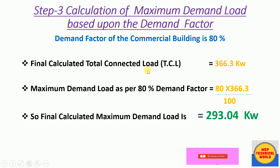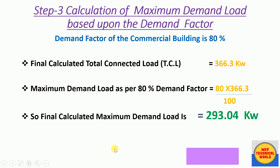The final total connected load including 10% extra is 366.3 kW. Applying the 80% demand factor: maximum demand load = (80 × 366.3) / 100 = 293.04 kW. This maximum demand load is in kilowatts, which is active power.